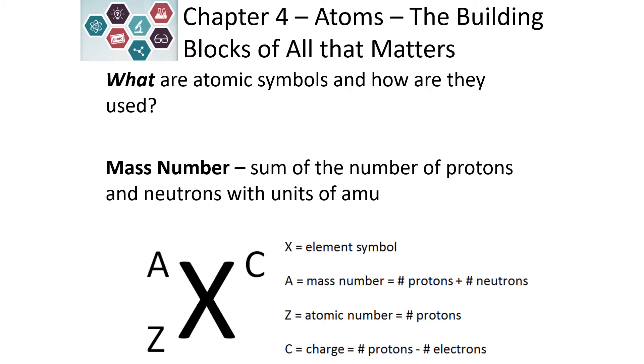The mass number is the sum of our protons and neutrons. This has units of atomic mass units or amu. This helps us to know what the mass of our atoms are and how heavy they are because protons have one atomic mass unit and neutrons have one atomic mass unit.